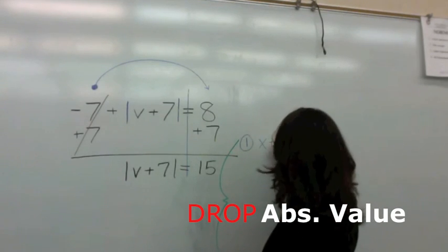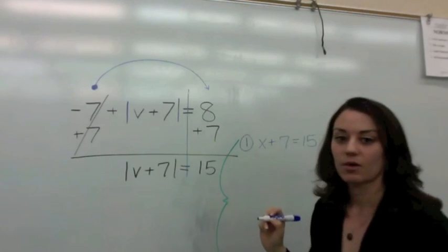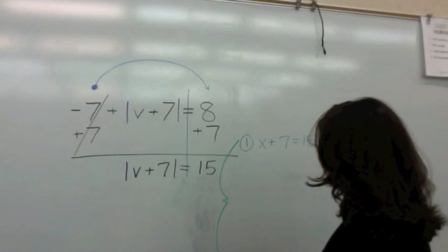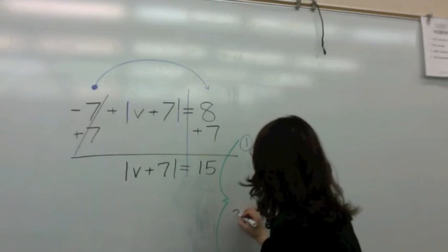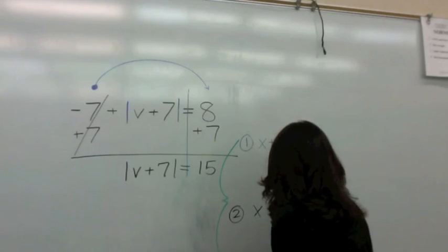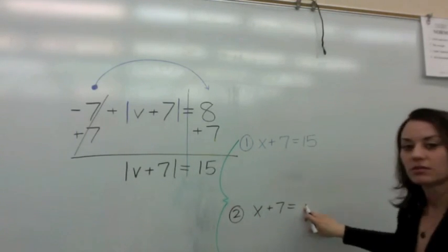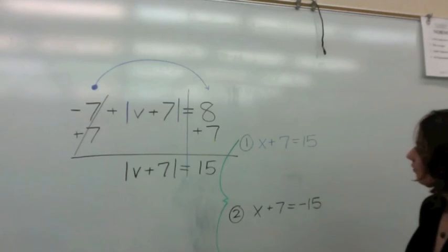So you have V plus seven now equals 15. V plus seven equals 15. And what is the second equation? V plus seven equals, what goes here? Negative 15. All right?